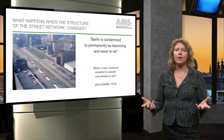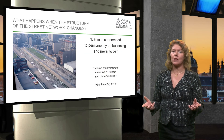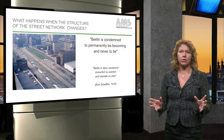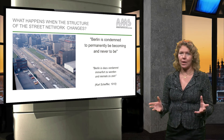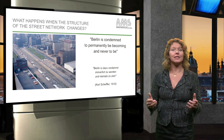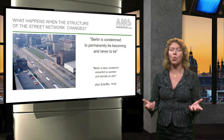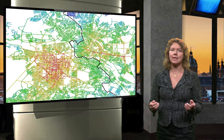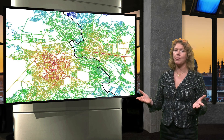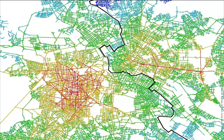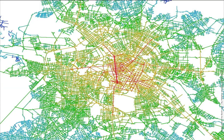What happens when the structure of the street networks change? One example to show how the actual integration affects the city is the Berlin case, before and after the Berlin wall. From the 60s to the 80s the city was divided by a wall. This blocked the movement routes between east and west. If you look at the map and see what happened when you removed the wall, then you will see the new centre of Berlin, which is the red line, the Friedrichstraße.